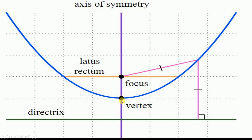This is your axis of symmetry, also called the principal axis. Your conic section is always symmetrical about the principal axis. The latus rectum, focus, vertex, and directrix are all visible in this diagram. Taking any point on the curve, the distance to the focus and to the directrix are equal, maintaining a constant eccentricity represented by the letter e.